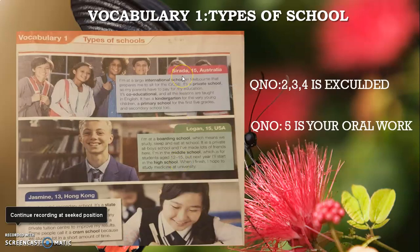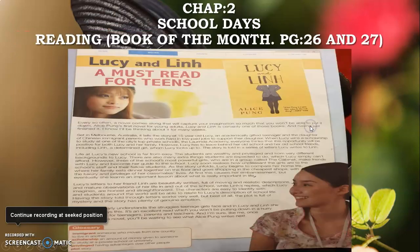Vocabulary One — Types of Schools: Three pictures of different schools from Australia, USA, and Hong Kong are shown. You will read the blocks and answer the questions. Question Number One is your oral activity. Questions Two, Three, and Four are excluded. Question Number Five is also an oral activity. Chapter Two, School Days — Reading: Book of the Month, pages 26 and 27, features an article.